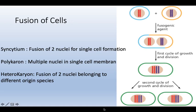There are three terms to quickly review. The first one is syncytium. Syncytium formation is basically the fusion of two nuclei within one single cell membrane. If the combination of multiple nuclei is involved in the structure of cell formation, we call it a polykaryons.